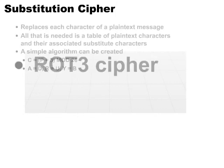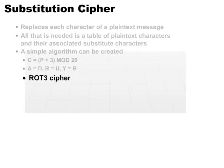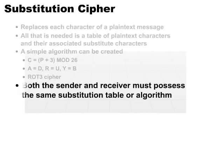This is actually called the rot3 cipher, which stands for rotate 3 cipher. Some people also call this the Caesar cipher. One thing you must be aware of is that both sender and receiver must possess either the same substitution table — which shows that an A is this character, an R is some other character — or they both have to be using the same algorithm.